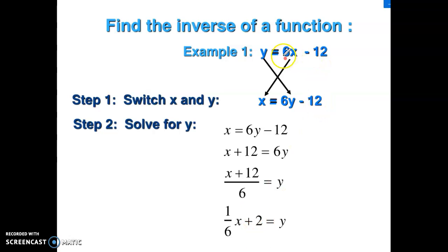I'm going to start off right here in this first example that I've got here. I've got two examples for you today. I've got y equals 6x minus 12. Now, that inverse relationship, remember, the domain and range gets switched around.